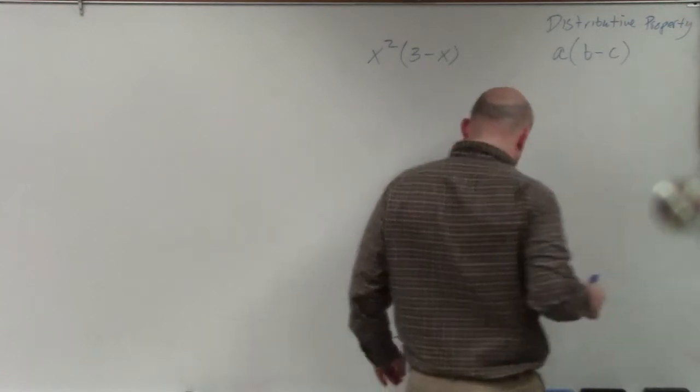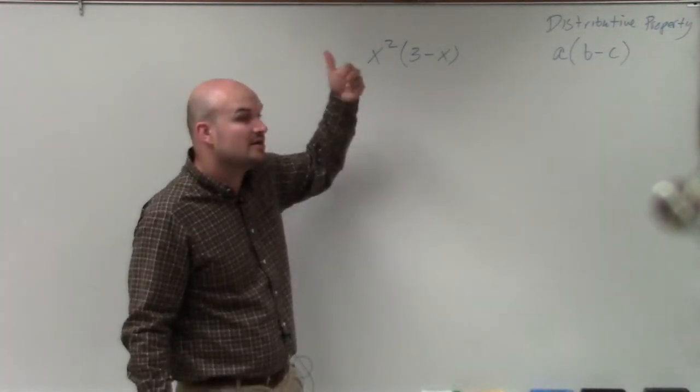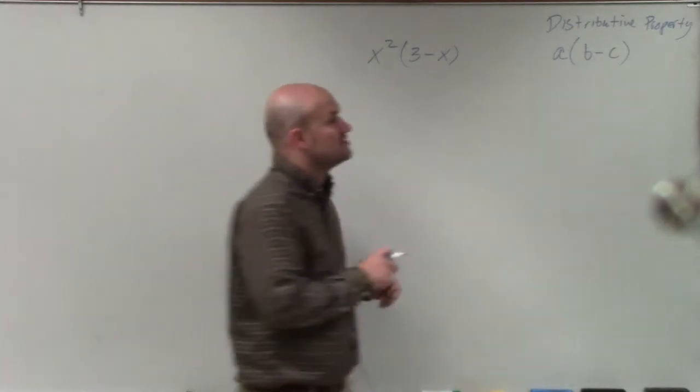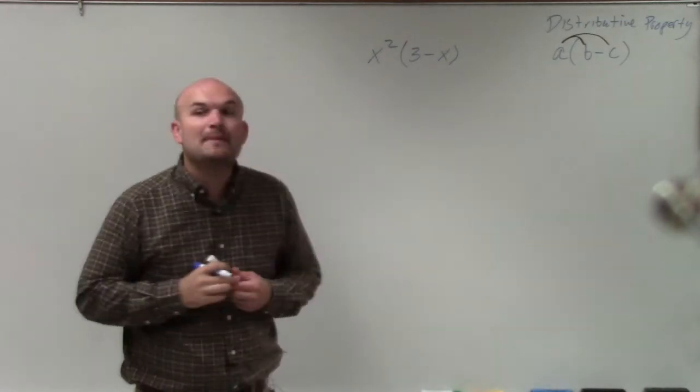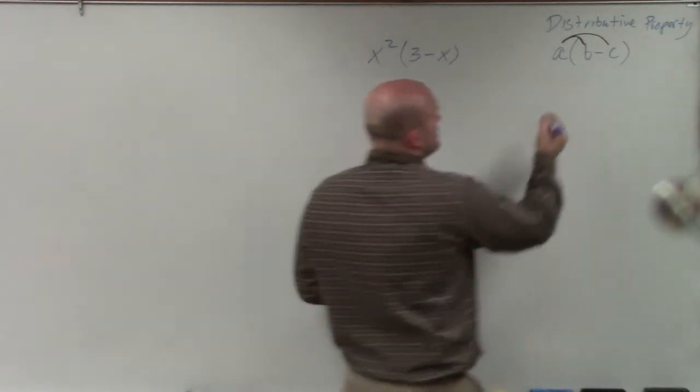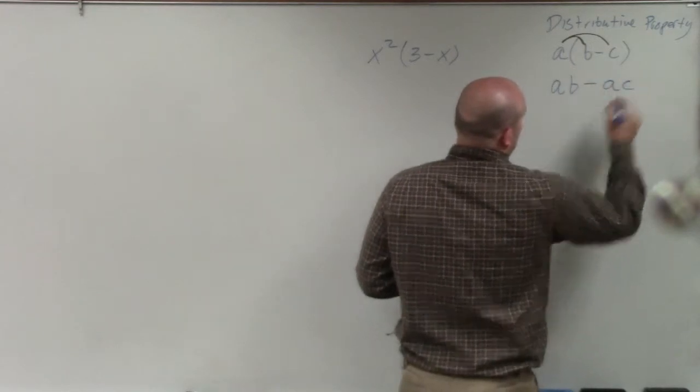And what the distributive property basically states is when you have a term or even an expression multiplying by another expression that is separated by addition or subtraction, you have to multiply that term and expression by both of the terms. So therefore, this would become a times b minus a times c.